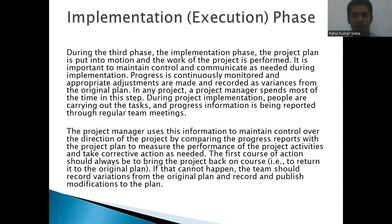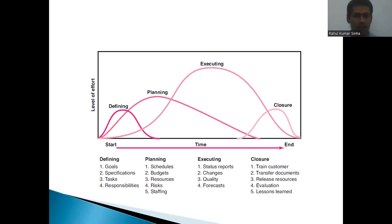The third stage is the implementation stage, which is also called the execution phase. Whatever you have planned, you are now going to execute that plan. When you execute your plan, if you work according to it, there are maximum chances that you will achieve your target. You can see in the figure: the first stage is the start, where you define what you want to achieve; then there is the planning stage where you write down the activities to perform; then the execution stage where you implement your idea to achieve your target; and finally the closure stage.